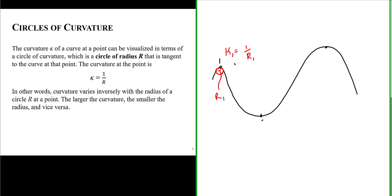Let's label this point two and this point three. If we look at a circle drawn touching point two, notice this circle has a certain radius. The radius of this circle is larger than the radius of the circle drawn for point one. So the curvature at point two is equal to one over the radius of this circle. Because this circle has a larger radius, the circle of curvature for point two has a smaller curvature than the circle of curvature for point one.